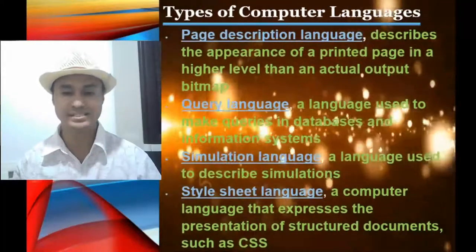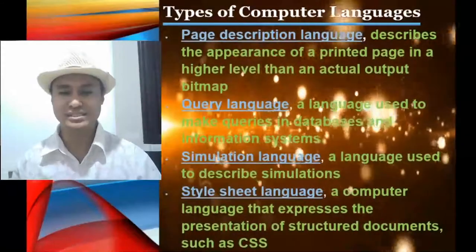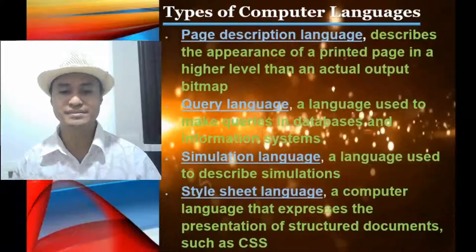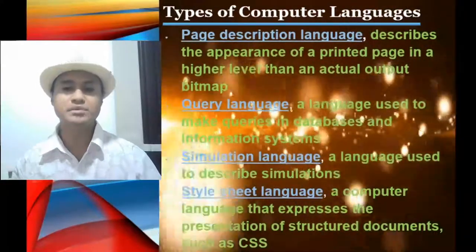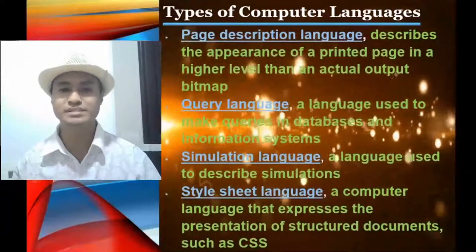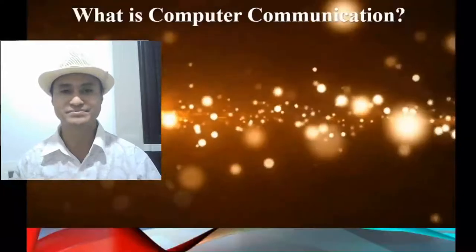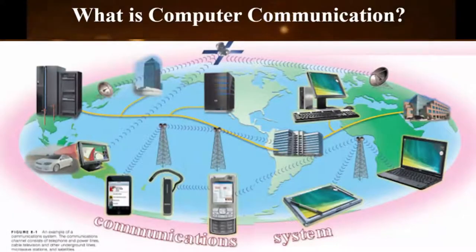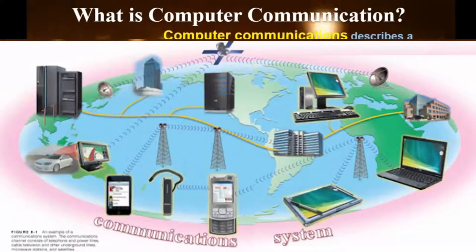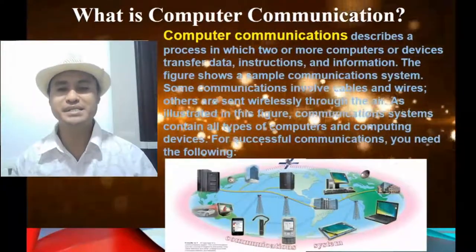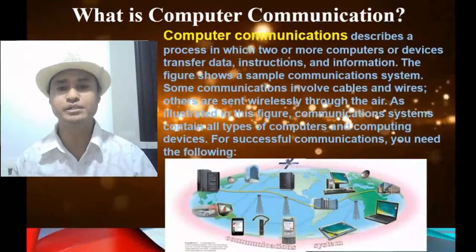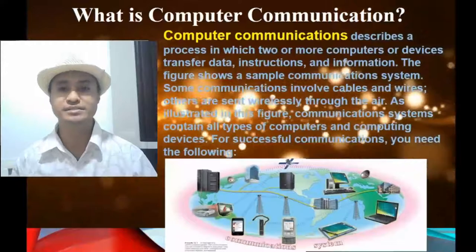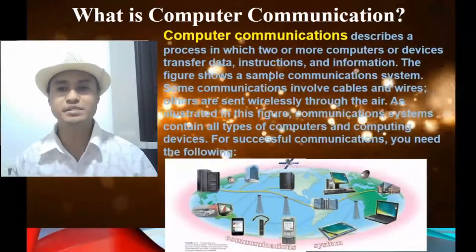Query language is a language used to make queries in databases and information systems. Simulation language is used to describe simulations. Style sheet language is a computer language that expresses the presentation of structured documents, such as CSS. Now, what is computer communication? Computer communications describes a process in which two or more computers or devices transfer data, instructions, and information.